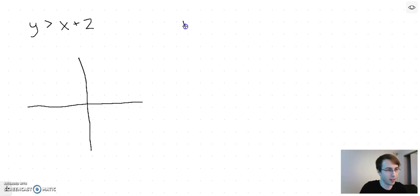The boundary of this inequality is the line y equals x plus 2. If we plot that line, we have a y-intercept of 2 and a slope of 1. Since this line is greater than and not equal to, we're going to leave this as a dotted line. If it were greater than or equal to, we'd keep it as a solid line.